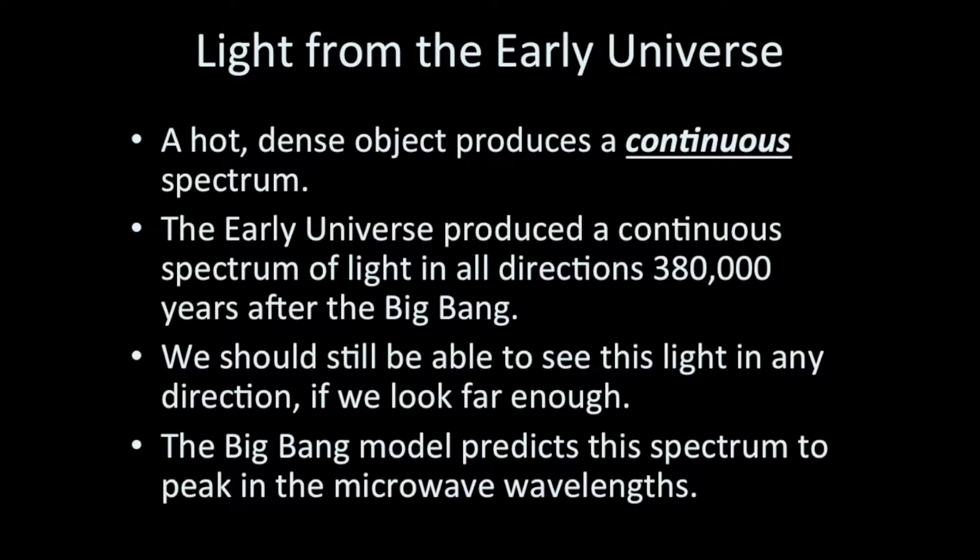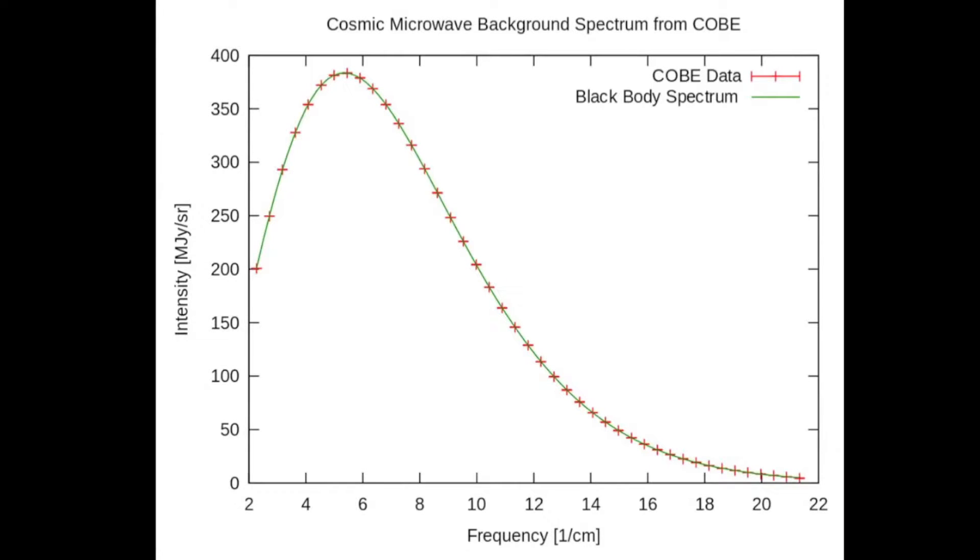And so this model of cosmology predicts that when the universe reaches this specific temperature of 3,000 Kelvin at about 380,000 years after the expansion begins, a continuous spectrum of light will be produced in all directions and at every location. This model predicts that if we were to observe this light today, we would see a continuous spectrum that has a peak wavelength in the microwave portion of the electromagnetic spectrum. We do observe this light.